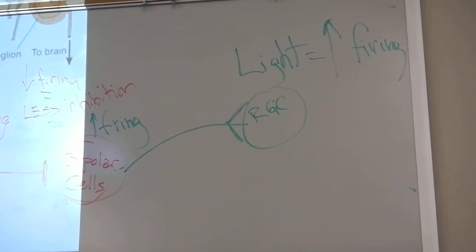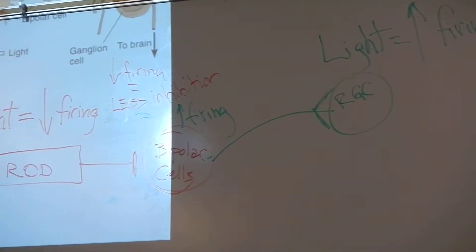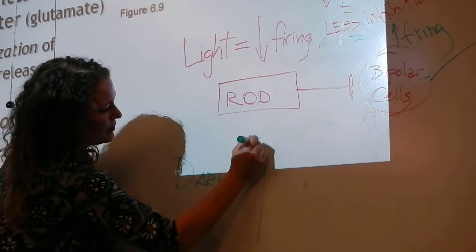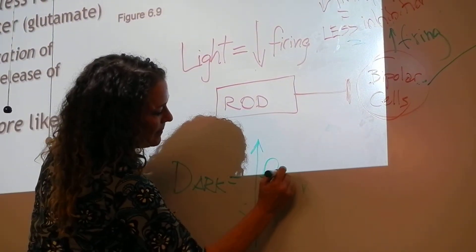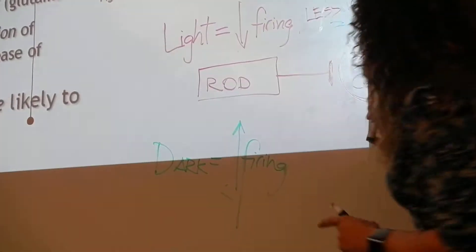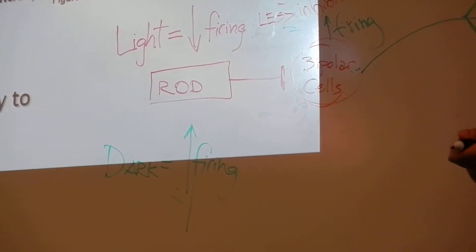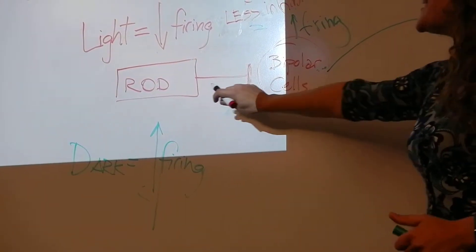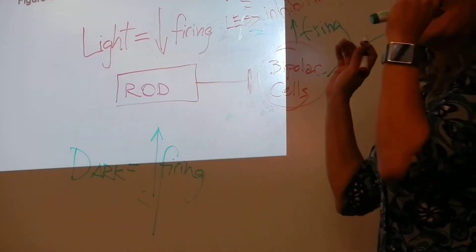In the case of darkness, darkness here, dark equals more firing. This is inhibitory. So more firing from this part, is he going to fire more or less? It's inhibitory. So the more he's inhibiting...